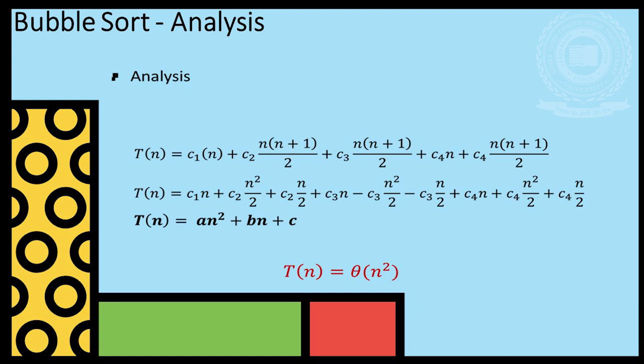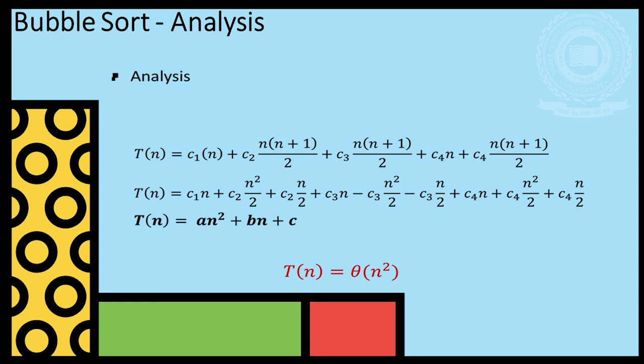We have c1*n plus c2 times sigma of i=1 to n-1 for n+1-i plus c3 times sigma of i=1 to n-i for n-i plus c4 times sigma of i=1 to n-1 for n-i where the highest power of n is n square. So, worst case complexity is n square.